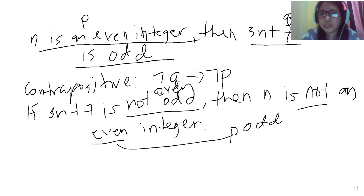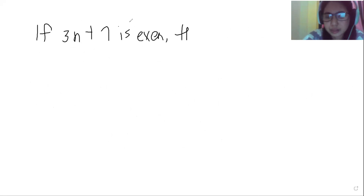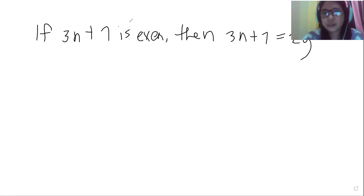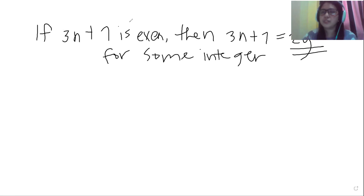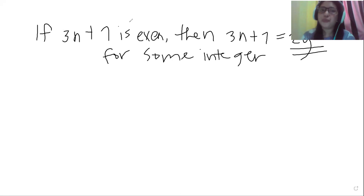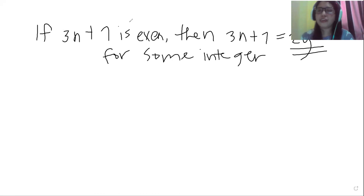Let us continue this. So using the even definition, we are going to show that N is an odd number. If 3N plus 7 is even, then we can write 3N plus 7 is equal to 2Y for some integer Y. It is valid to equate this with 2Y because we are saying it is even, and by definition any number in the form 2Y, when multiplied by 2, is an even number.